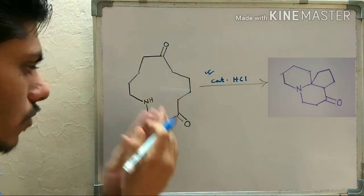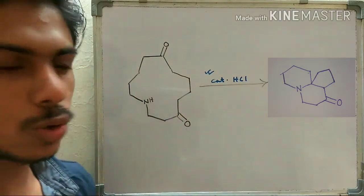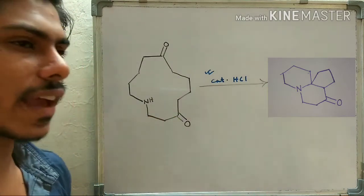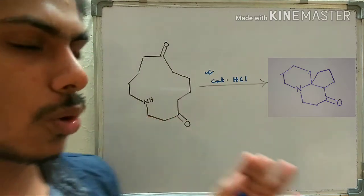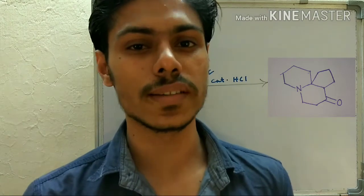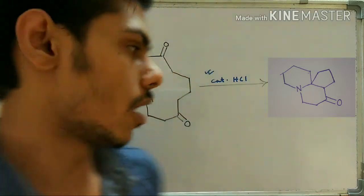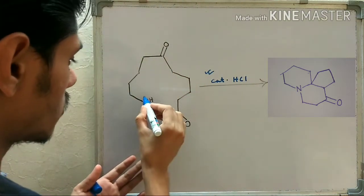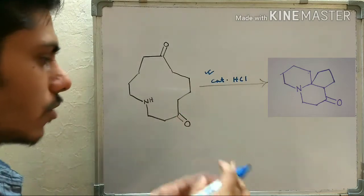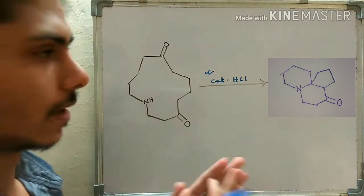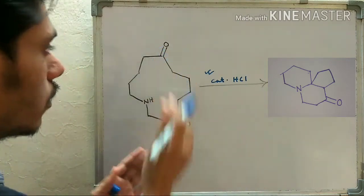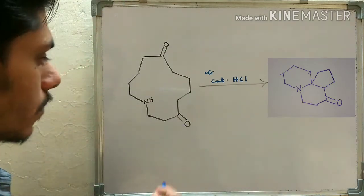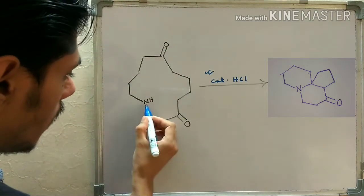Whenever you have a carbonyl group and an amine in your reaction, one reaction you should always think about is the condensation reaction. What is meant by condensation reaction? The nitrogen will attack on the carbonyl group and it will form an imine. Now there are two carbonyl groups — which one will it attack?